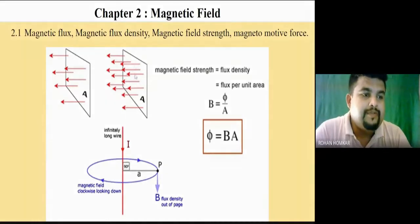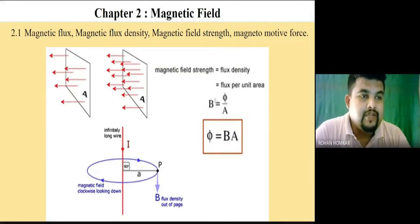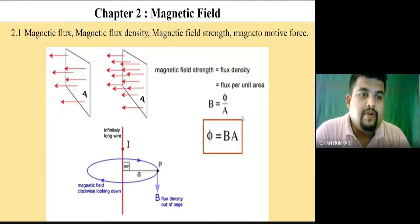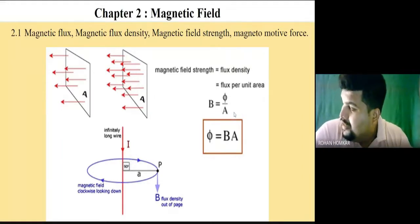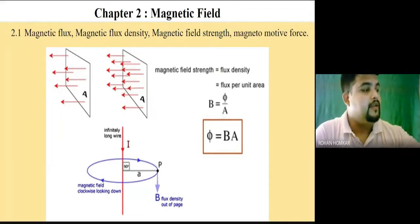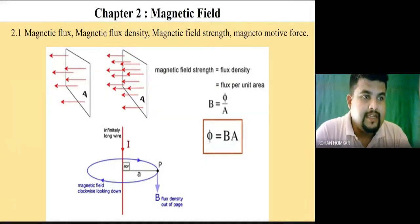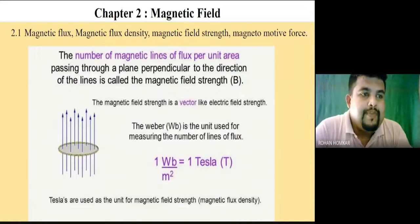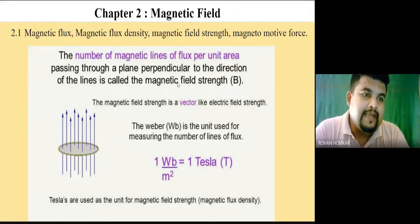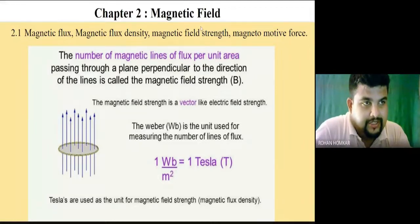This is shown as a rectangular shape, but the same shape can also be circular, trapezoid, hexagonal, or any other format. Whatever the area, we don't consider its shape but identify the value of area in meter square. Write down the formula: B = φ/A, where B is magnetic flux density, φ is magnetic flux, and A is the area. The number of magnetic lines of flux per unit area passing through a plane perpendicular to the direction of the lines is called magnetic field strength. Write down this definition in your notebook.